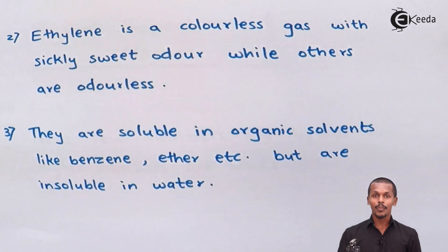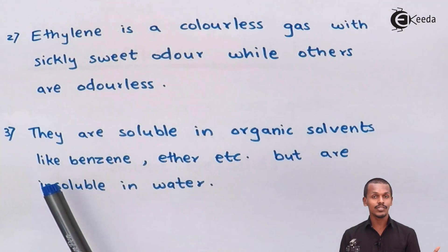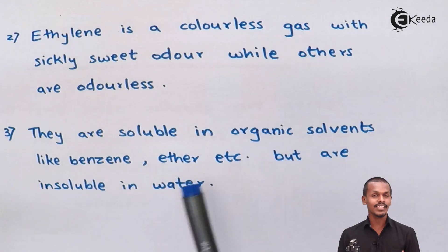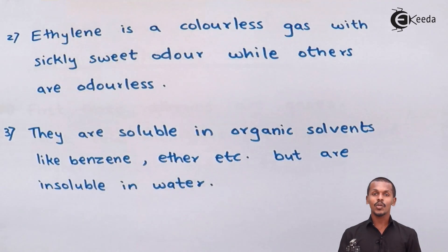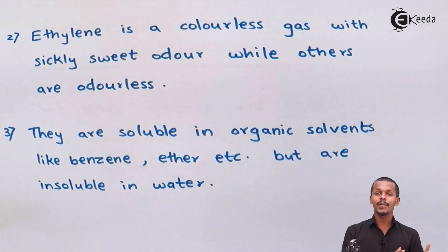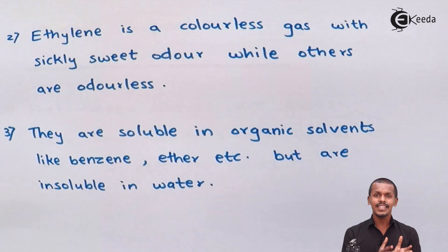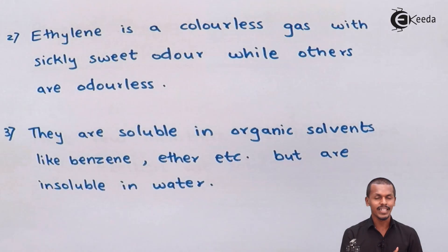All alkenes are soluble in organic solvents like benzene, ether, etc. The reason is that alkenes are hydrocarbons — organic compounds — and organic compounds are very easily soluble in organic solvents like benzene or ether.